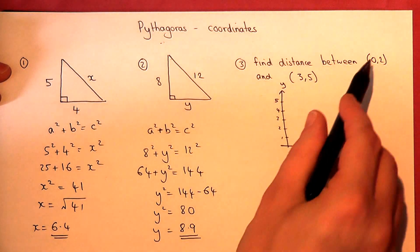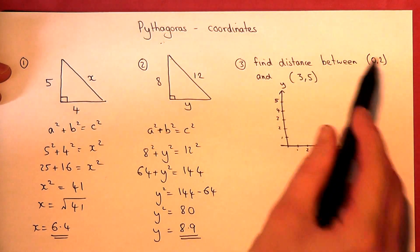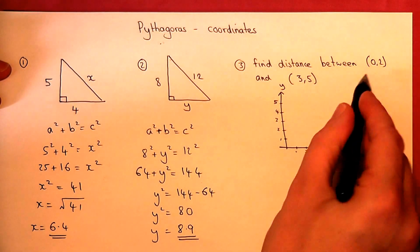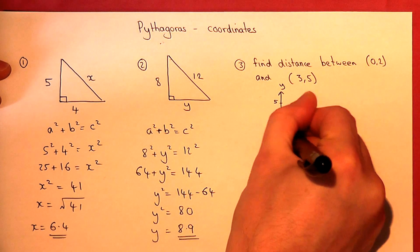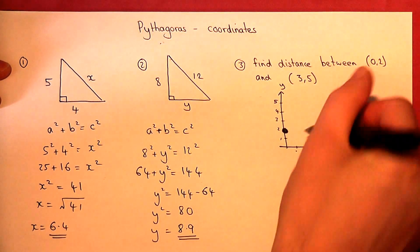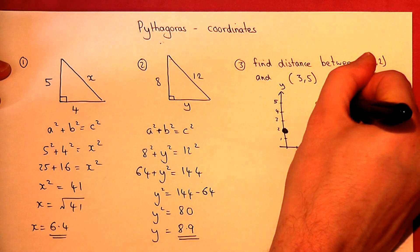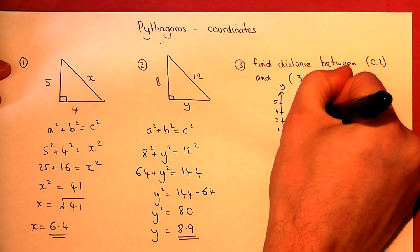But suppose we're given two coordinates, and the question asks for the distance between these two coordinates. 0, 2 is across 0, up 2. That's my first coordinate. The second one is across 3, up 5. So across 3, up 5. I want to find out this length here.